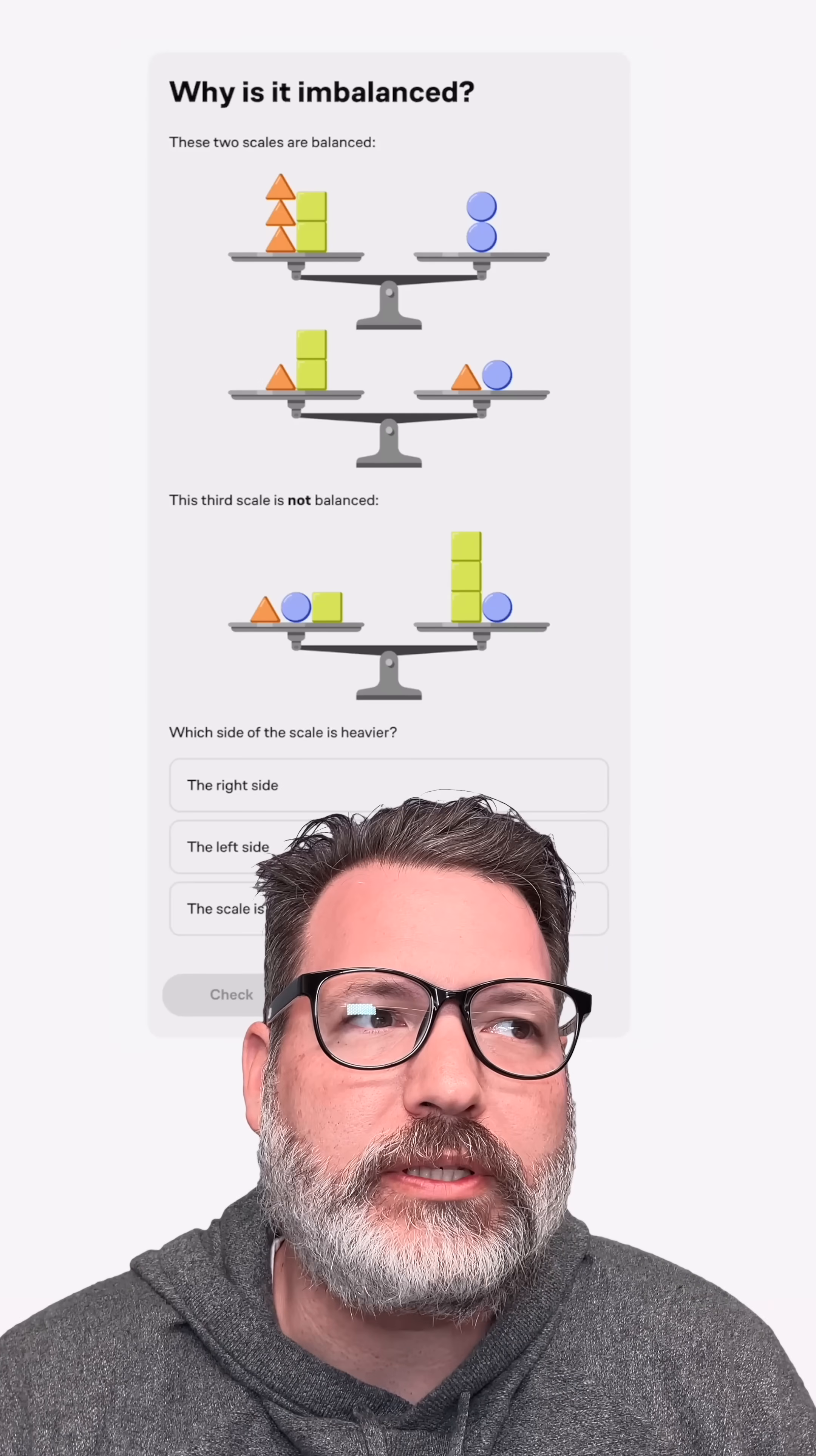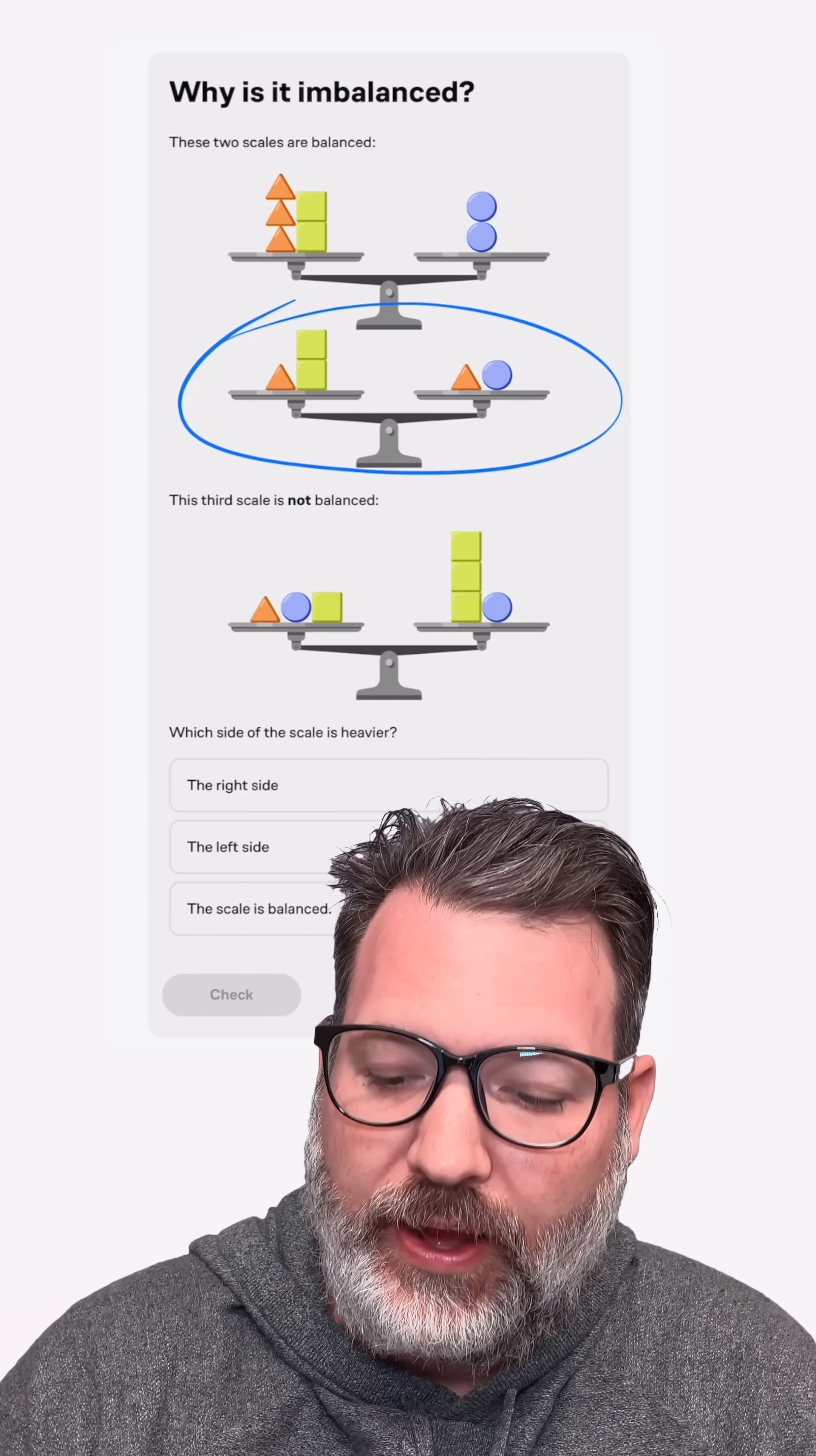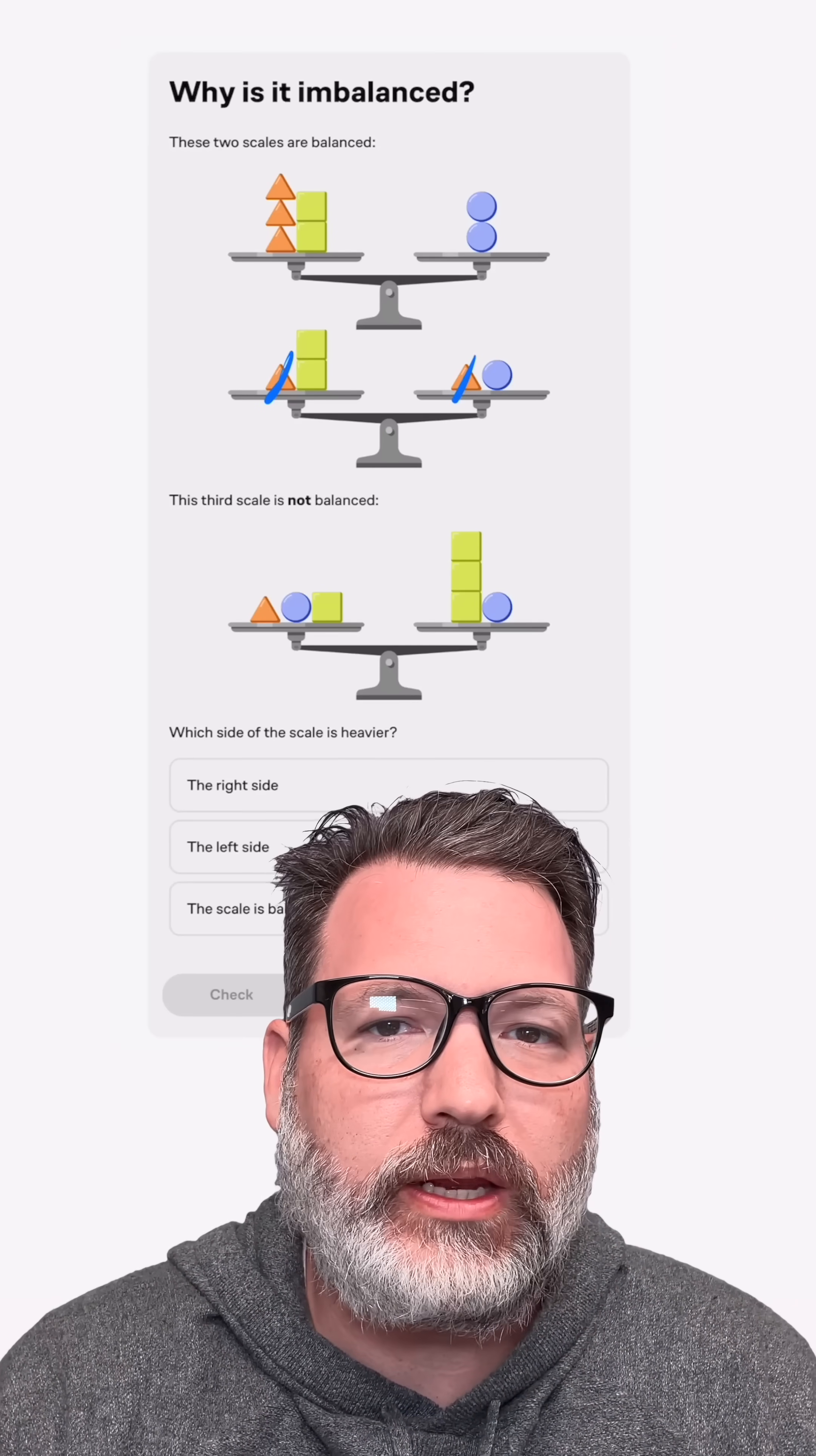Instead, here's what I noticed. Both of these first two scales are in balance, and in the second scale, I've got triangle plus two squares on the left, match up with triangle plus circle on the right. Now, triangle and triangle, we can ignore those.